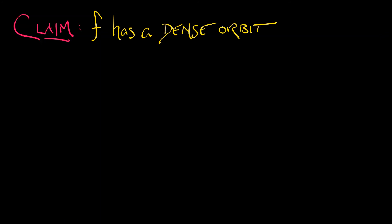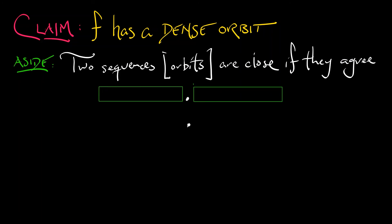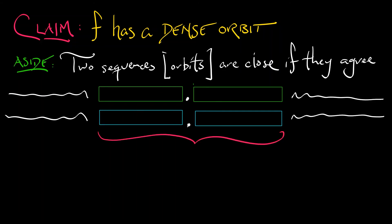Does the horseshoe have a dense orbit? Yes. This requires considering what it means for two points on orbits to be close. Two sequences or itineraries corresponding to points are close if they agree on a large symmetric block about the decimal point — they have to agree now and agree close in the future and close in the past. The longer that block is, the closer these two points are. So what we're really claiming is that there exists some orbit in the horseshoe map that can approximate any point you want on as large a block as you want.